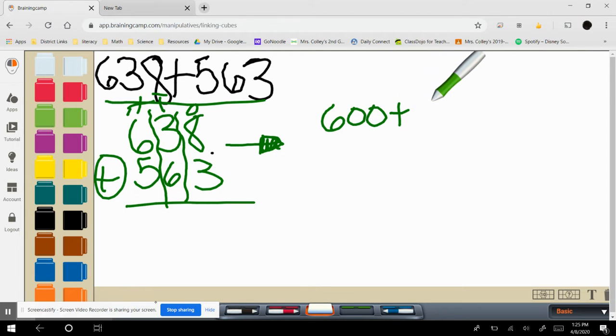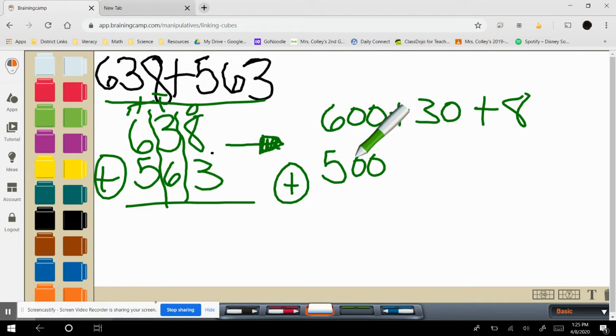600 plus 30 plus 8. I know y'all knew that because we've been doing it all year. Bring over my plus sign. 500 plus, I have six tens, 60, plus 3.